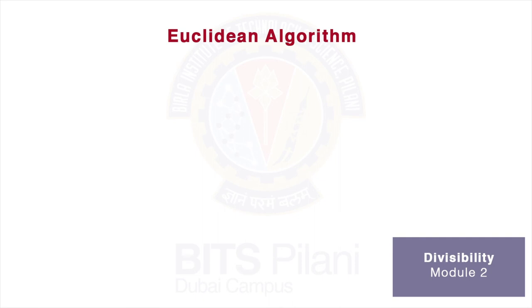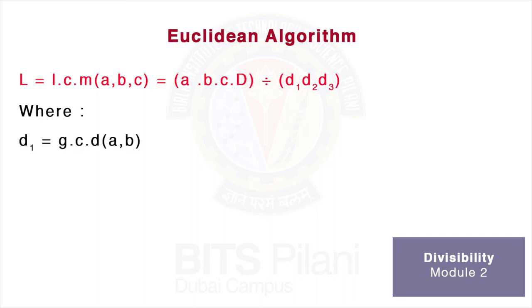To find the LCM of 3 integers a, b, c, we use the formula LCM(a,b,c) = (a × b × c × D) / (D₁ × D₂ × D₃), where D₁ is the GCD(a,b).